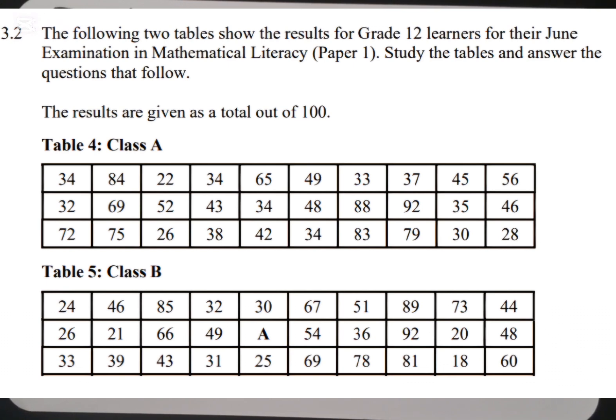The results are given as a total out of 100. Meaning that these results are given out of a total of 100. Like for example, the first learner will get 34, it's 34 out of 100. 84 out of 100, 22 out of 100, and so on, up to 28 out of 100. Then we move to class B. We're having 24 up to 16. That is the information that we are having here.